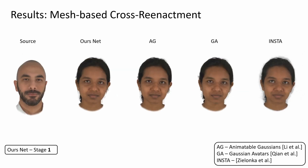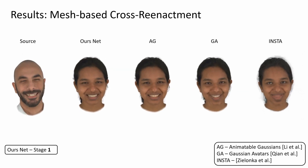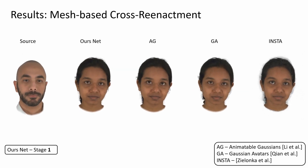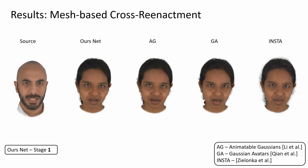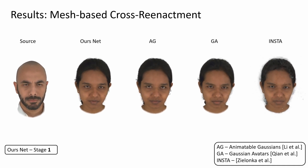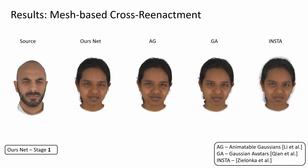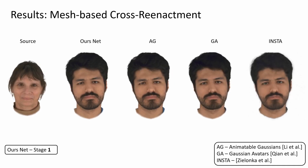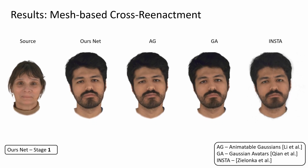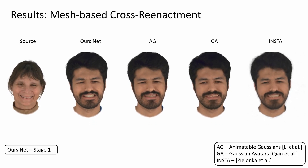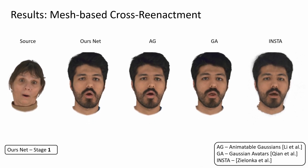Cross-reanimation involves transferring facial expressions from a source to a target. In this example, we utilize ground truth meshes for expression transfer. Thanks to the robustness regularization of our training input, our method along with Animatable Gaussians experiences fewer artifacts.